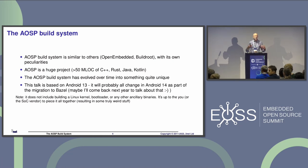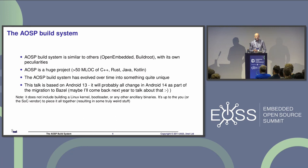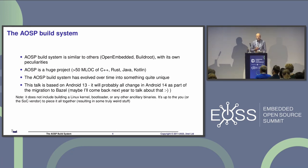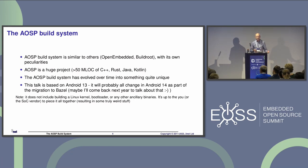Android is a large chunk of code. I used a tool to count the lines of code — 50 million lines, mostly C++, a big chunk of Java, a bit of Kotlin, a bit of Rust. You need a build system to build all this. This is Google, so they wrote their own. If you're familiar with OpenEmbedded or BuildRoot, you'll see a lot of similarities — a build system is a build system.